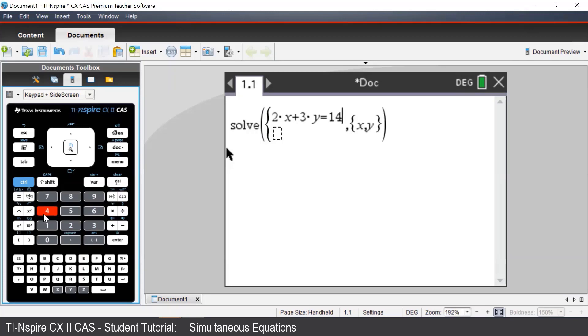To enter in our second equation, we can press the down arrow on our handheld, and enter in 2x minus y equals 6, and press Enter.